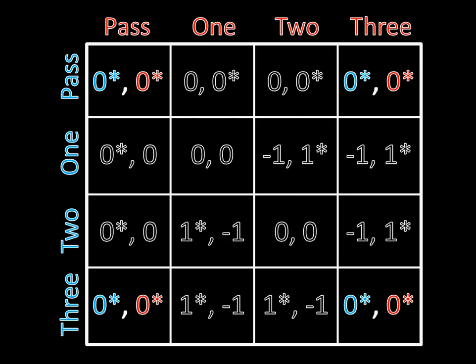Notice that when we used this best response method, it was much more efficient than going through 16 different outcomes. All we had to do was consider four strategies for each player — that's basically doing half the work. Instead of looking at 16 different situations, we only had to look at eight. So when you see more complicated games, it's always best to mark the best responses and find your pure strategy Nash Equilibria that way. That wraps up this video and our initial discussion on pure strategy Nash Equilibria. In the next video, we'll see that not all games have a pure strategy Nash Equilibrium, and look at what to do in that situation. Join me then.